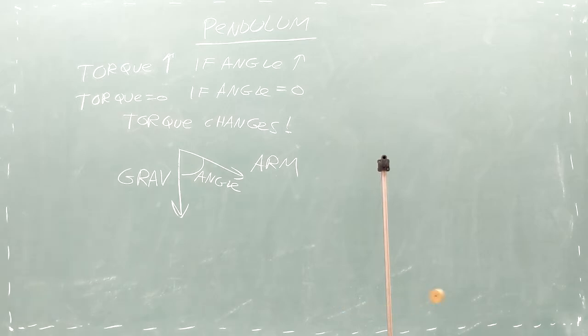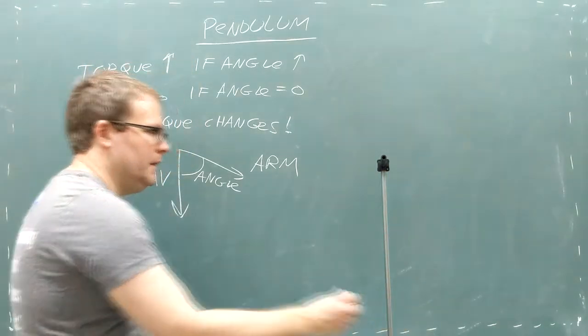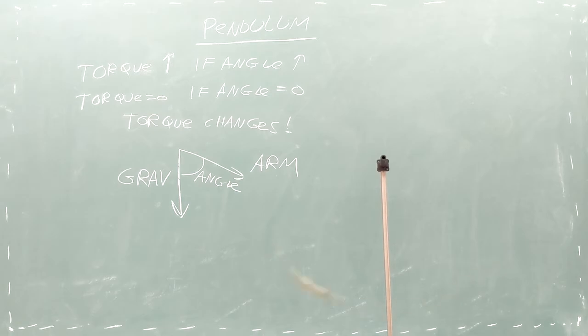This means that the torque on a pendulum changes as it swings back and forth, similar to how the force on a spring changes when it oscillates.